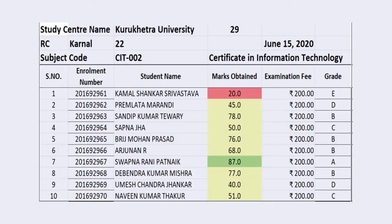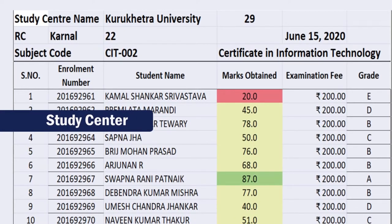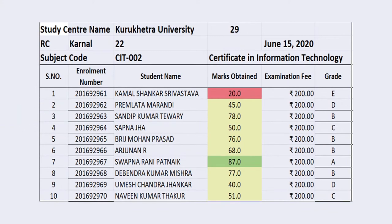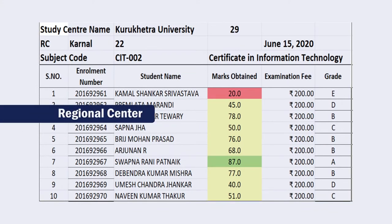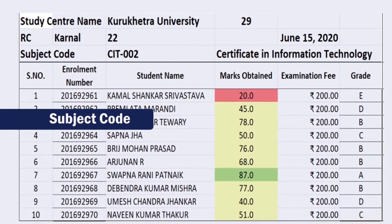To convert this particular data into information, many more things need to be added. First, this example data has to be put into proper context — like, this data belongs to whom? For example, this data may belong to a study center — let us say Kurukshetra University, which is a study center of IGNOU or a distance learning program. The regional center may be Karnal. The subject code is CIT 002, which is certificate in information technology. Date information is also there. So now the data has been put into some perspective.